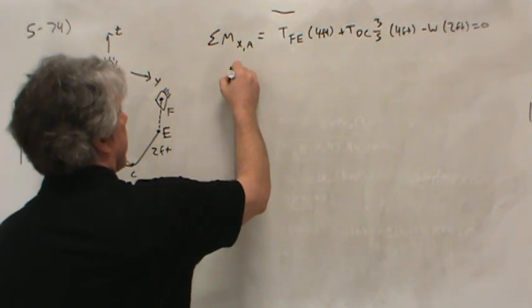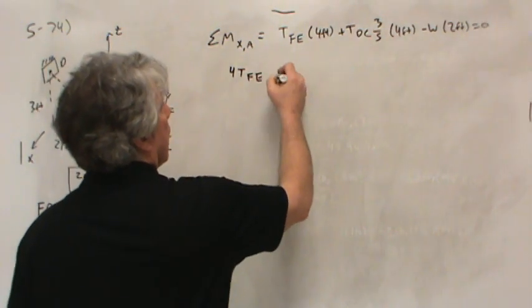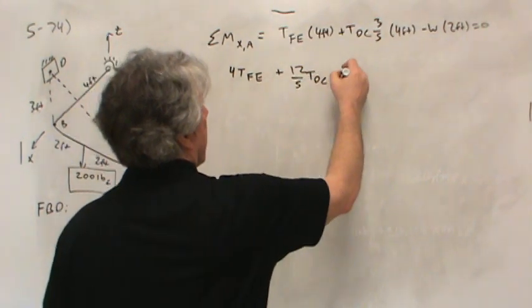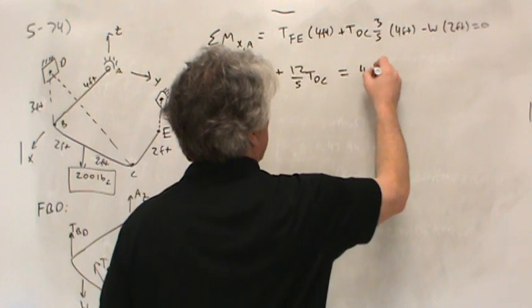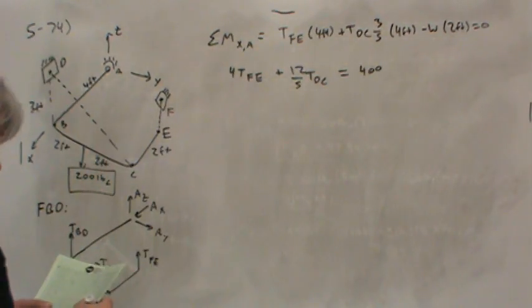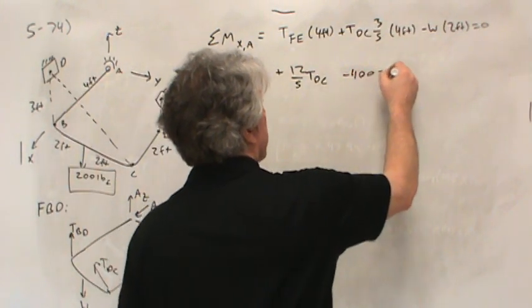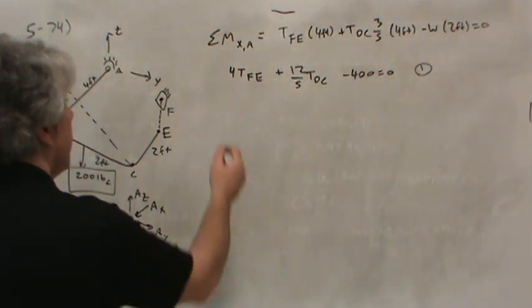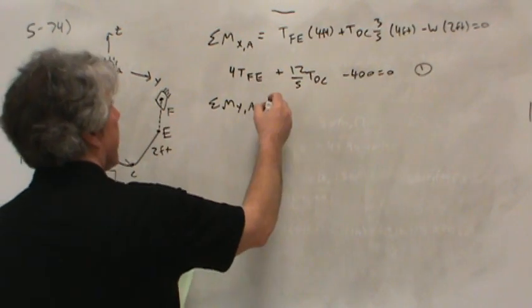And I can write it a bit more simply than TFE, or for TFE, plus 12 fifths TDC equals, well weight is 200 times two is 400. So there's one equation with two unknowns, and I'm going to call this, in fact let me just leave the 400 on this side, so minus 400 equals zero, and I'll call this equation one.